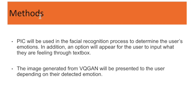Some methods are that the Personal Image Classifier will be used in the facial recognition process to determine the user's emotions. In addition, an option will appear for the user to input what they are feeling through a text box. The image generated from VQGAN will be presented to the user depending on their detected emotion.